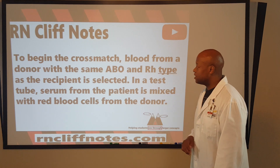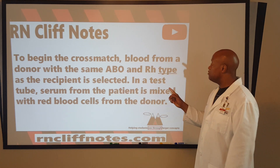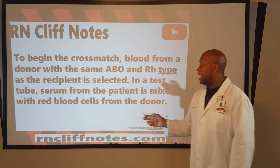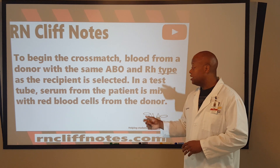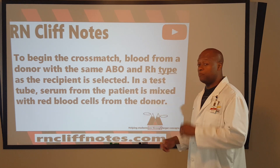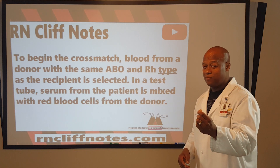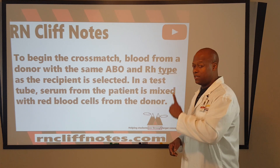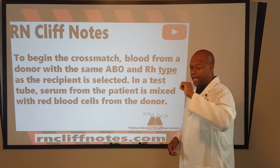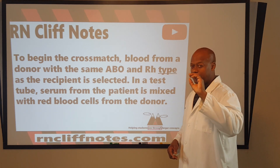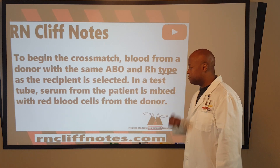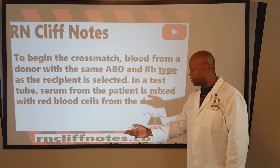Here's how it goes. To begin a cross-match, blood from a donor with the same ABO and RH type as the recipient is selected. In a test tube, serum from the patient is mixed with the red blood cells from the donor — serum from the patient and the red blood cells of the donor. In later series we'll get into antibodies and things we find in the serum and plasma, but for right now: serum from the patient and the red blood cells of the donor.